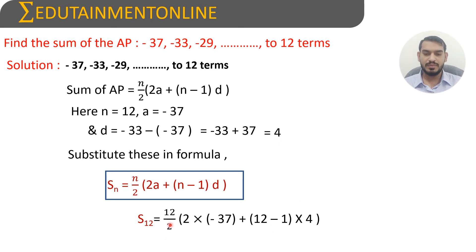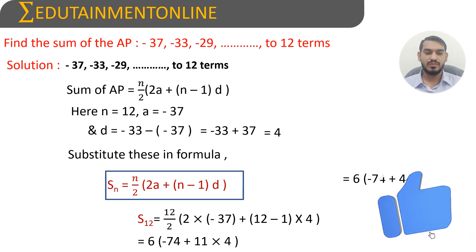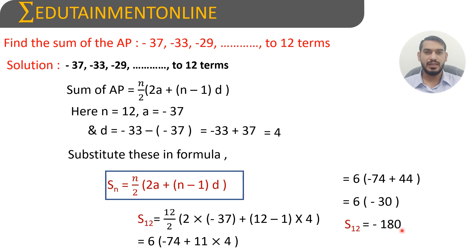This simplifies to 6 × (2×(-37) + 11×4) = 6 × (-74 + 44) = 6 × (-30) = -180. Therefore the sum of the given AP up to 12 terms is -180.